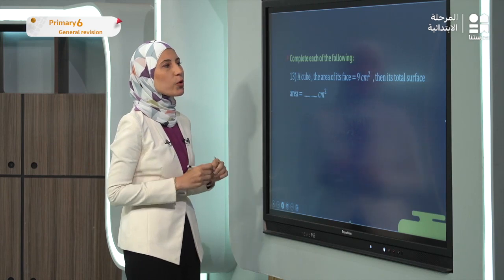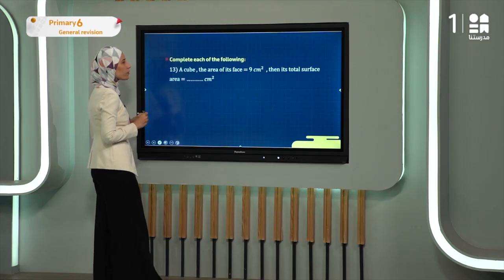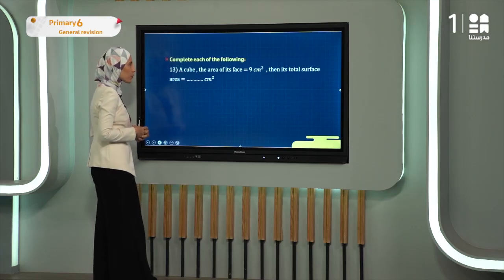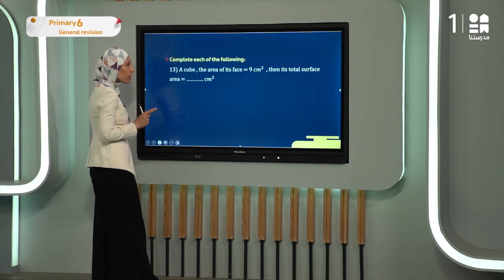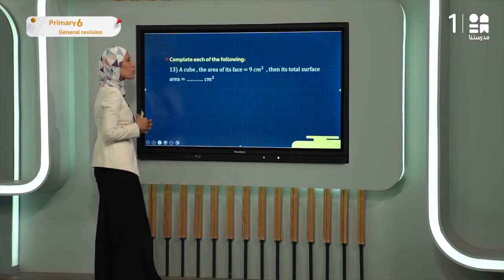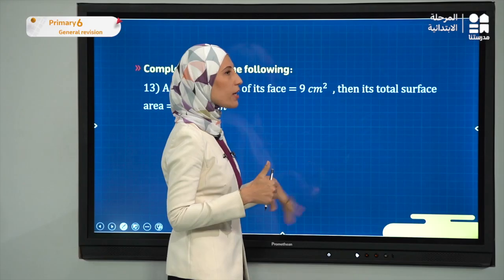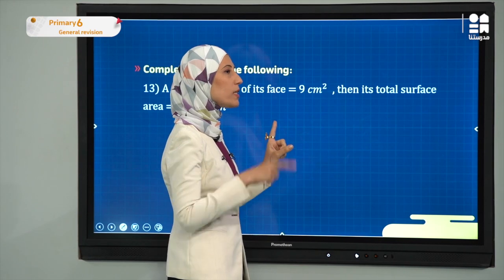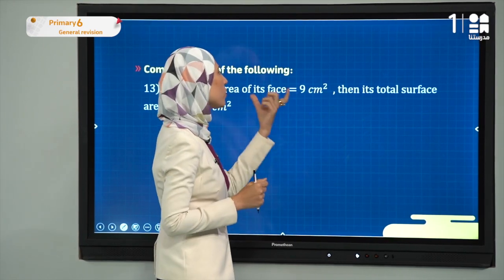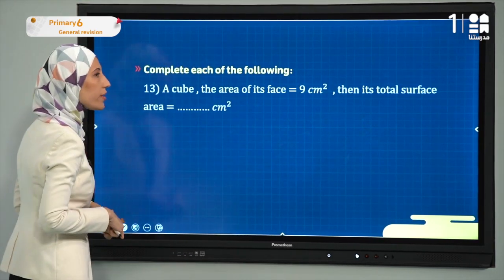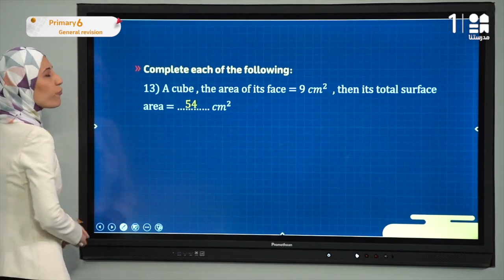Exercise thirteen: a cube where the area of one face equals 9 cm². The total surface area of a cube equals the area of one face times 6 faces. So: 9 × 6 = 54 cm².